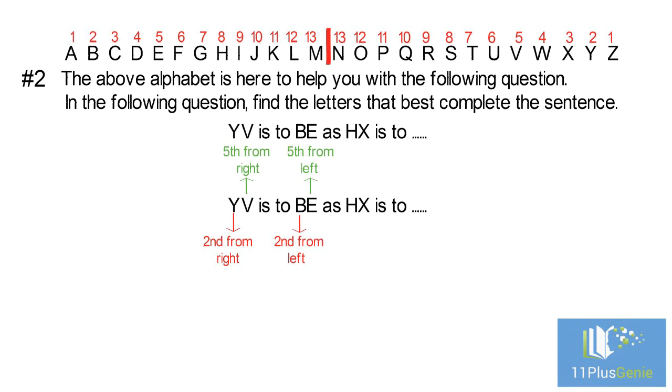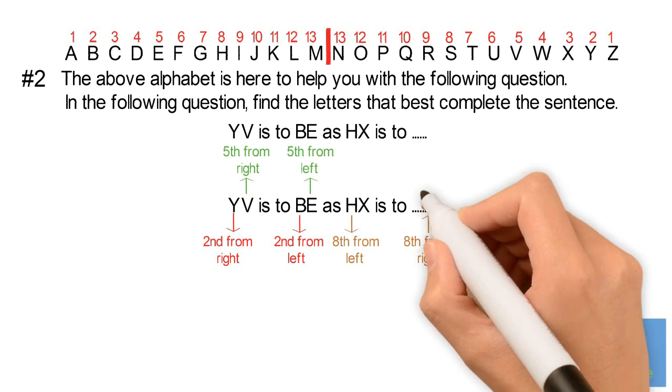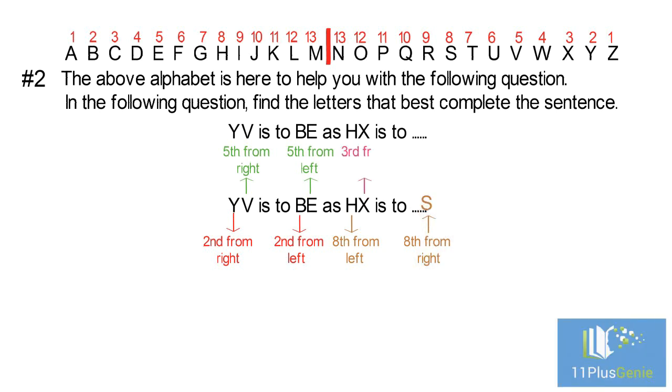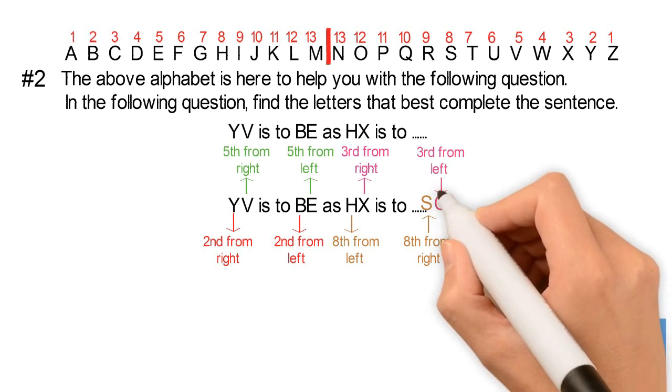To find our answer, we need to follow this same rule. H is the eighth letter from the left and we need to find the eighth letter from the right, which is S. X is the third letter from the right and C is the third letter from the left. The missing letter pair is SC.